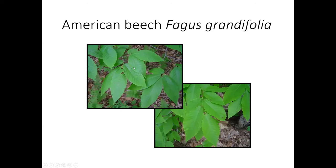American beech is a very common species — it's the most common pole-size tree in New York. There are about a billion beech trees between one and five inches in diameter, and that number has been increasing about 10% every five years. Those four- and five-inch beech saplings pretty quickly get into decent-sized bolt wood categories. The leaves are simple and glossy, the twigs are relatively slender and brown, and they have elongated buds.